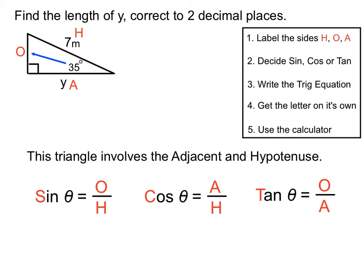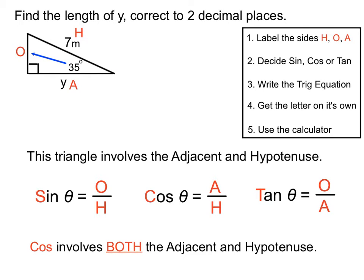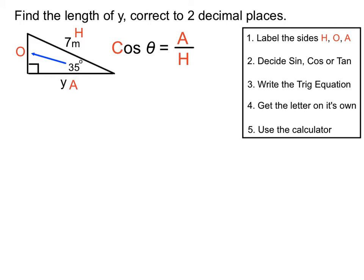We need to select whether to use sine, cos or tan. The cos ratio uses the adjacent and the hypotenuse — it's the only one that uses both those sides. So we'll choose cosine as the basis of the rest of our solution.